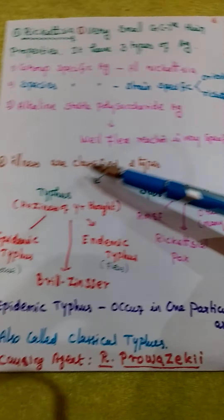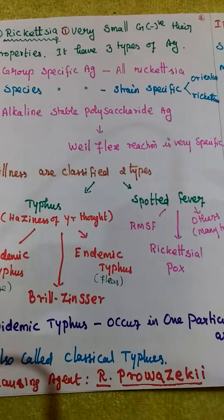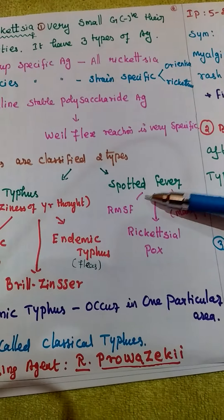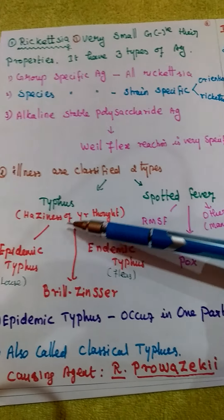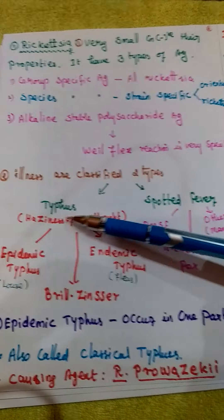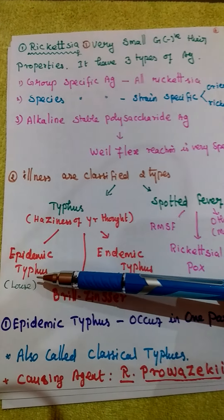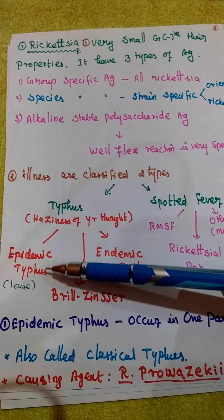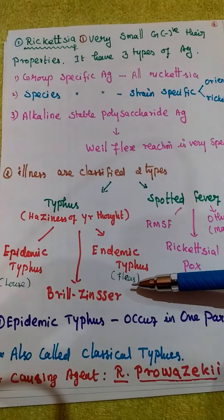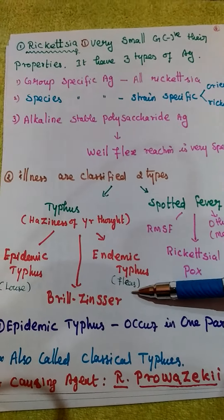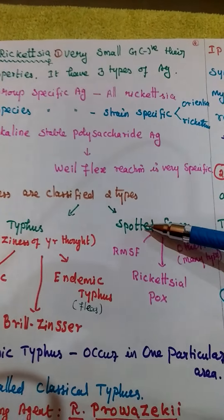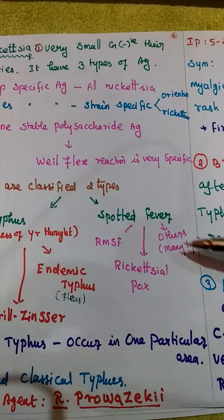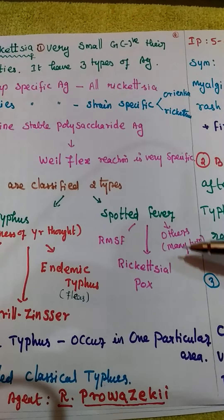Based on illness, rickettsia is classified into two types: typhus fever and spotted fever. Typhus means haziness of fever in the mind. It has three different types: epidemic, Brill-Zinsser, and endemic. Epidemic type is caused by louse bite; endemic type is caused by flea bite. Spotted fever includes Rocky Mountain spotted fever, Rickettsialpox, and other types — which have many subtypes.